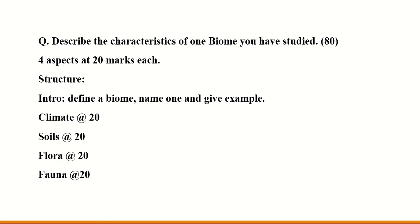We're going to look at the most basic question — probably the nicest question — that comes up first when it comes to the desert biome. The question is: describe the characteristics of one biome you've studied. That's worth 80 marks. The biome we are studying is the desert biome. In front of you there's a breakdown of how we answer this question. There are four aspects you must discuss and each aspect is worth 20 marks.